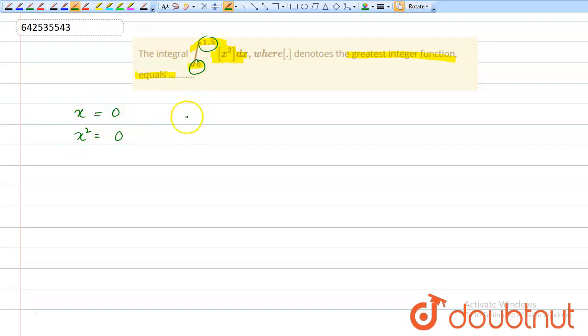For the upper limit, when x equals 1.5, x² becomes 2.25. So comparing the limits: x goes from 0 to 1.5, while x² goes from 0 to 2.25.